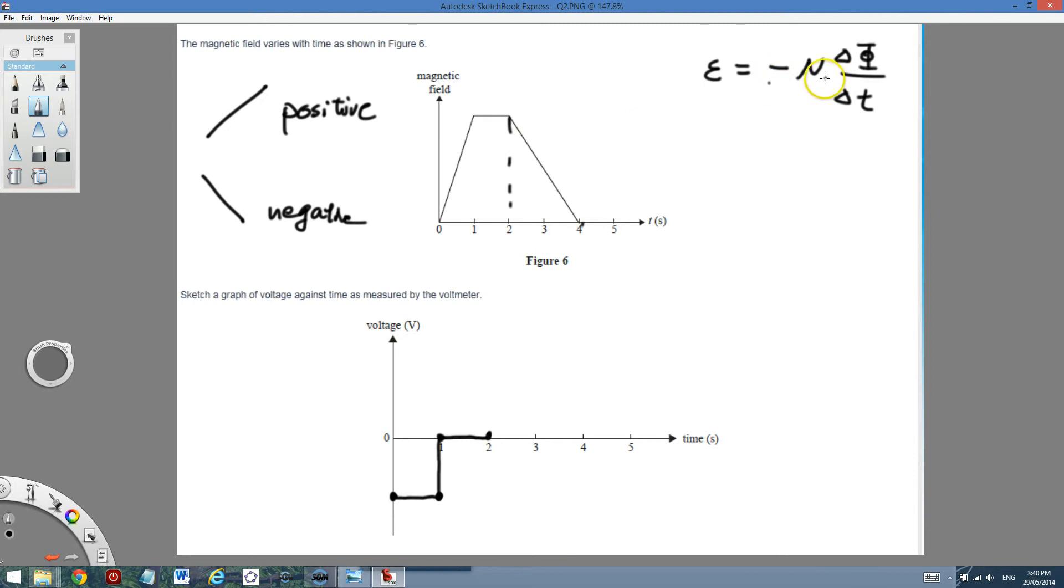However, with the minus in the front, it becomes positive. But have a look at the gradient. The actual value of the gradient should be less than the first part. So when you sketch it, it's going to be constant since it's a straight line. But the amplitude, the value should be less.